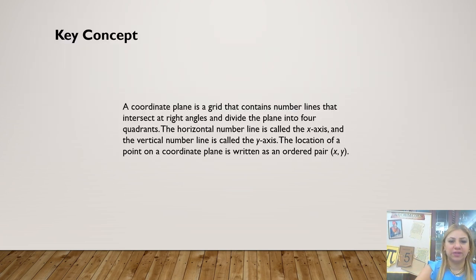Our key concept for this lesson: a coordinate plane is a grid that contains number lines that intersect at right angles and divide the plane into four quadrants. The horizontal number line is called the x-axis and the vertical number line is called the y-axis. The location of a point on a coordinate plane is written as an ordered pair (x, y).